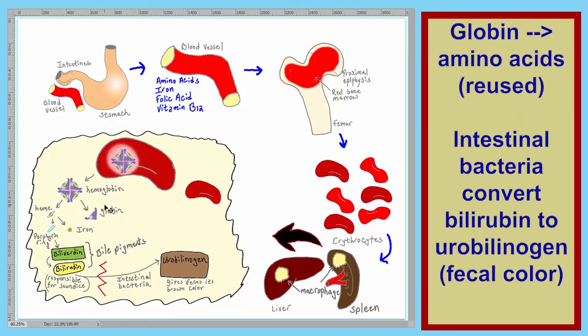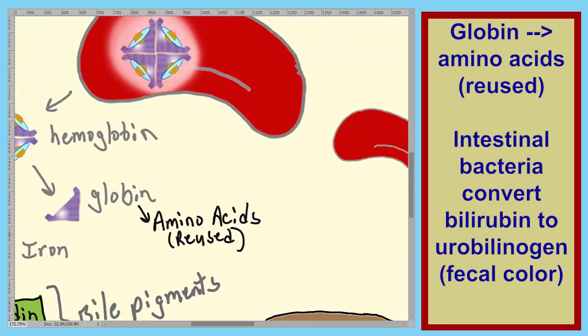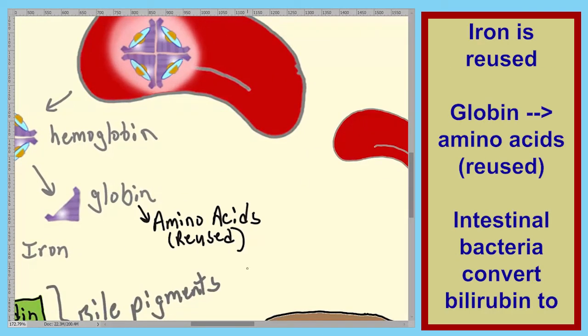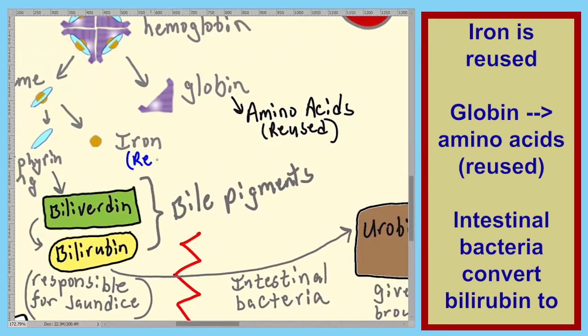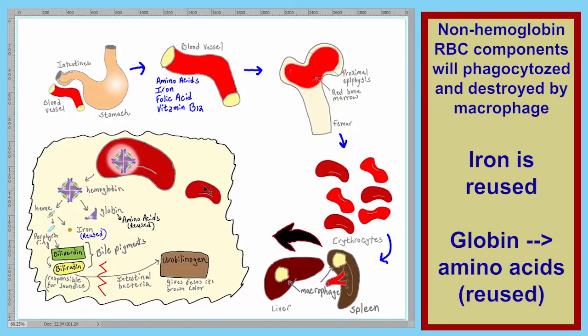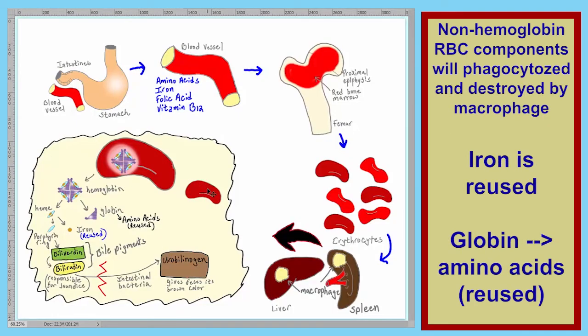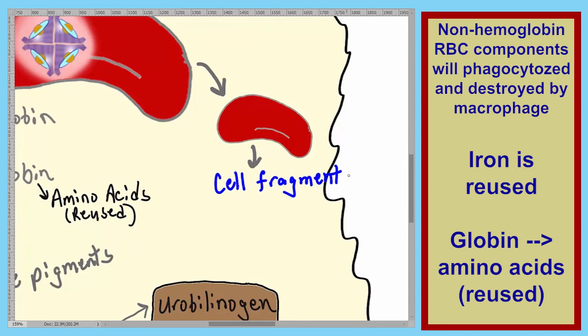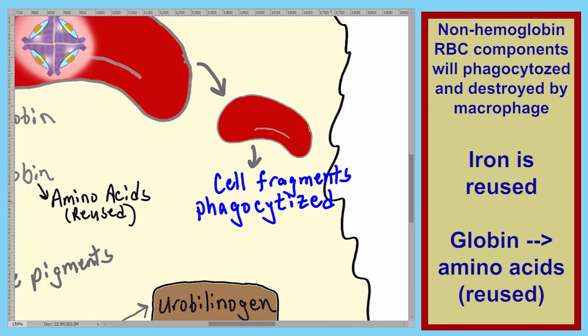Now let's discuss what happens to the globin — this one is relatively simple. The globin is broken down into free amino acids that can be reused by the body. The iron will also be reused. As for the rest of the red blood cell — the non-hemoglobin component — it will be completely phagocytosed and destroyed by the macrophage. The remaining cell fragments will be phagocytized by the macrophage.